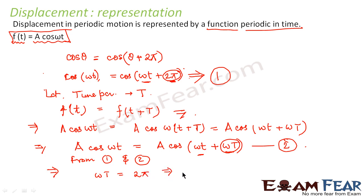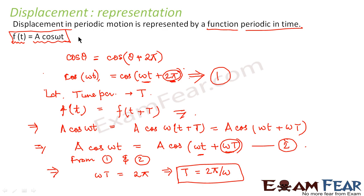Therefore, capital T = 2π/ω. This equation characterizes the motion of the oscillating particle and tells us that the particle will repeat the pattern of its motion after every time period T = 2π/ω. This is how we represent displacement in case of oscillatory motion.